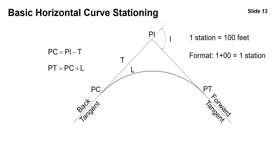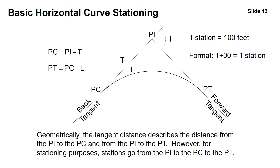When using stationing in English units, one station equals 100 feet, written in the format 1+00. Geometrically, the tangent distance describes the distance from the PI to the PC and from the PI to the PT. However, for stationing purposes, stations must go from the PI back to the PC and then along the curve to the PT using the length of the curve. You cannot simply add the tangent length to the PI to get the PT — we want to station along the roadway itself, not along the preliminary traverse.